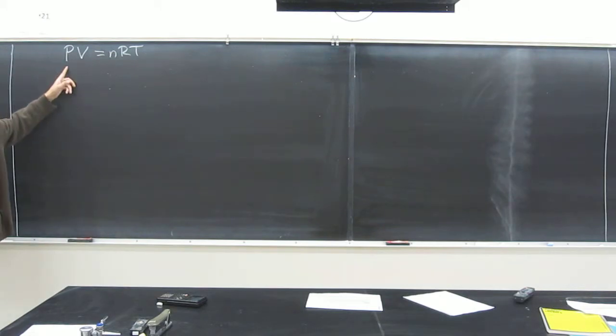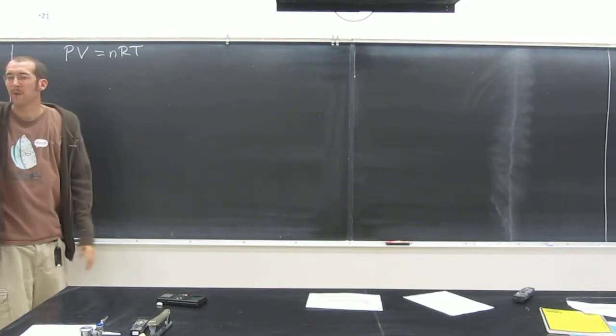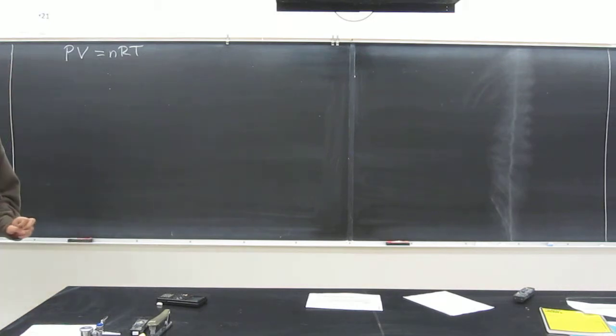P stands for pressure, V stands for volume, n stands for number of moles, and T stands for temperature. R is what's called the universal gas constant, and it's a constant. It's in fact 0.0821 liters ATM over moles kelvin, but it's something that will be given to you, so you don't have to memorize it.